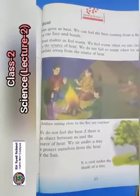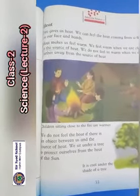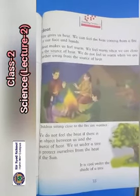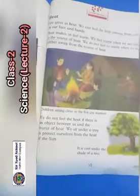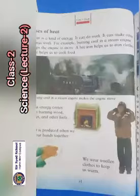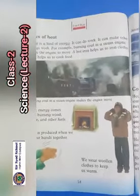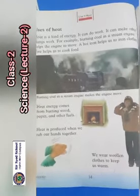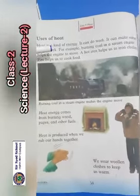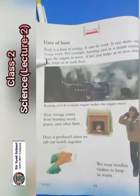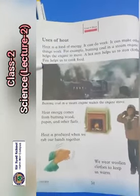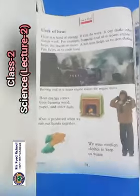We sit under a tree to protect ourselves from the heat of the sun. Next, page number 54: Uses of Heat. Heat is a kind of energy. When we rub our hands together, we produce heat. Examples include: a burning coal, a steam engine that helps the engine to move, a hot iron that helps us to iron clothes, and fire that helps us to cook food.